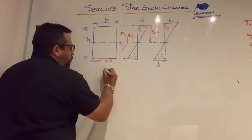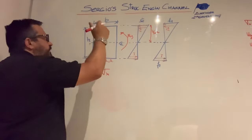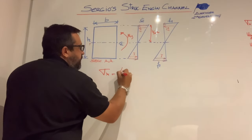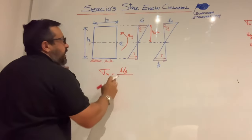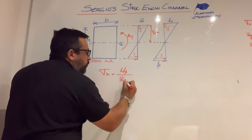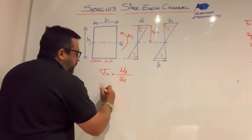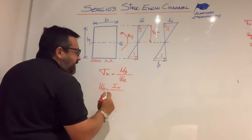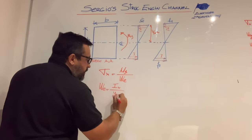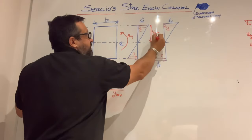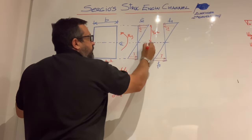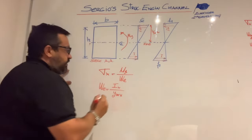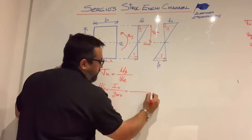According to Navier's law, stresses perpendicular to our transversal section shall be equal to the bending moment MY divided by the elastic resistant modulus. The elastic resistant modulus is the same as the second moment of inertia divided by Ymax. Ymax, as you can see, is the distance between the elastic neutral fiber and the top of the rectangular section.